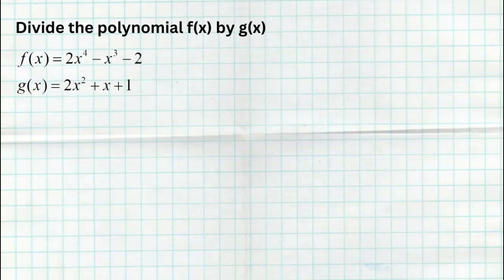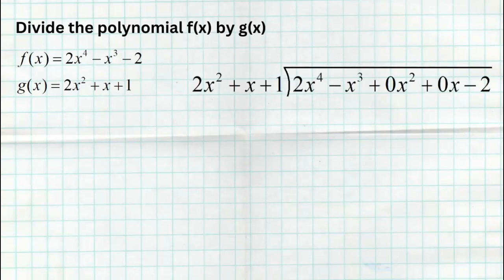In the next example, we divide f(x) by g(x) again, but something important happens: the dividend 2x⁴ - x³ - 2 is missing some terms. We must include placeholders for every degree, so we write 2x⁴ - x³ + 0x² + 0x - 2 inside the bar. We cannot skip those placeholders or we'll get confused. The divisor 2x² + x + 1 goes on the outside, and then the whole process starts over.